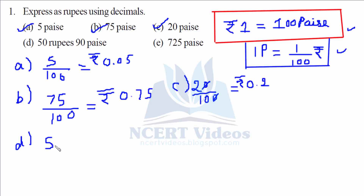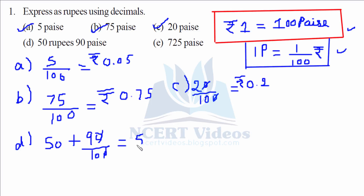For part d, 50 rupees and 90 paise. We will not disturb 50 because it's already written in terms of rupees; we'll only convert 90 paise. So it gives us 50.9 rupees.